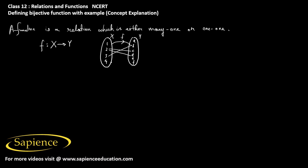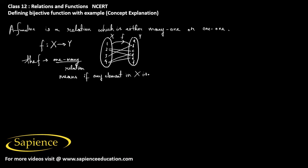And 3 is related to b and 4 is related to e, and suppose d also. So here we have a one-to-many relation. A one-to-many relation means that if any element in the set X is related to more than one element in Y, then it is called a one-to-many relation.